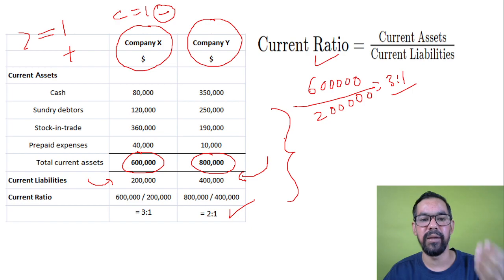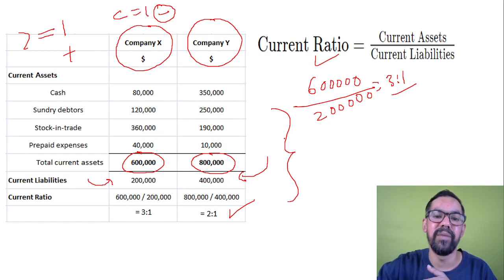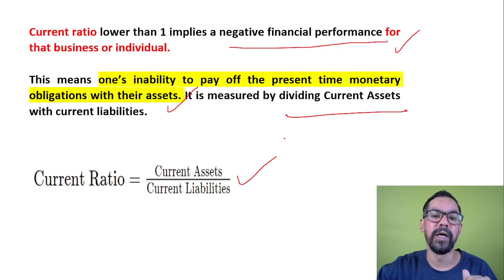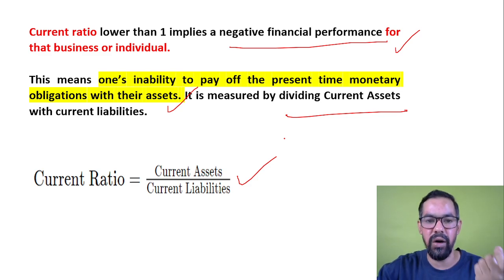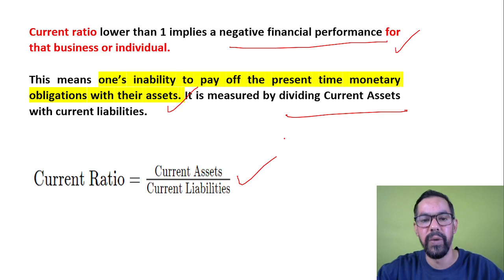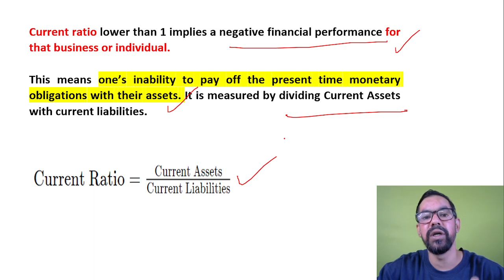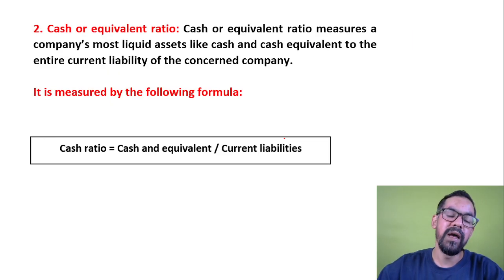For practice, you can take any balance sheet or profit and loss account and solve it. In examinations, they may give a direct question with total current assets and total current liabilities, or a more complex case with multiple entries like rent receivable, salary payable, or tax dues, requiring you to calculate the current ratio. I'll also come with an MCQ session based on ratio analysis covering current ratio and other ratios.